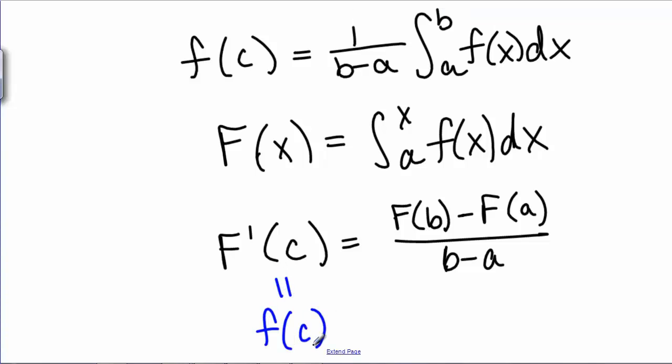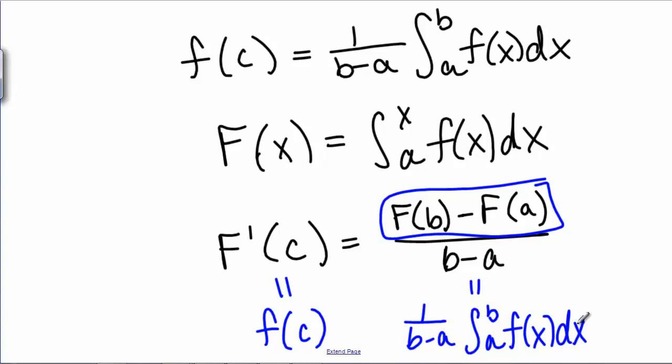And we also know that when we integrate from a to b of f of x dx, that we get capital F of b minus capital F of a. So this is 1 over b minus a, replacing this with the integral that equals the integral from a to b of f of x dx, giving us the answer that we want.